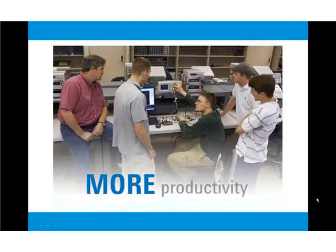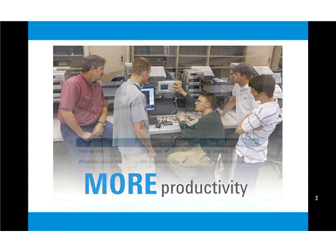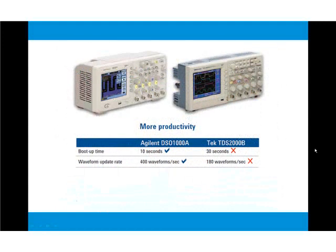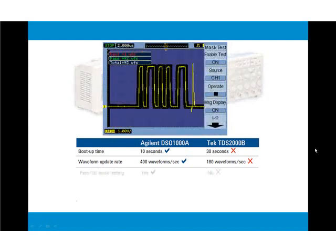Get more answers in less time. With one-third the boot up time and twice the waveform update rate, you will get more answers in less time. The Agilent 1000 series oscilloscopes offer pass-fail mask testing that automatically detects waveforms that deviate from the standard you set, ultimately increasing productivity and the ability to find failing signals.